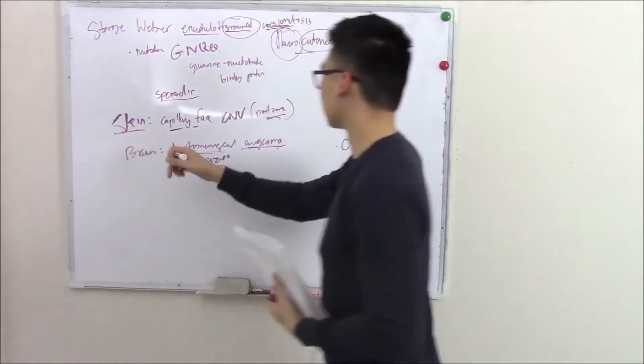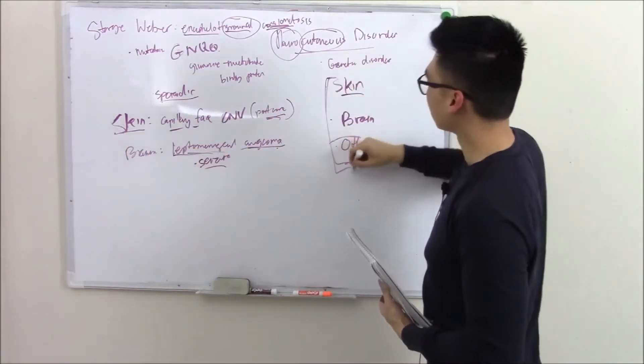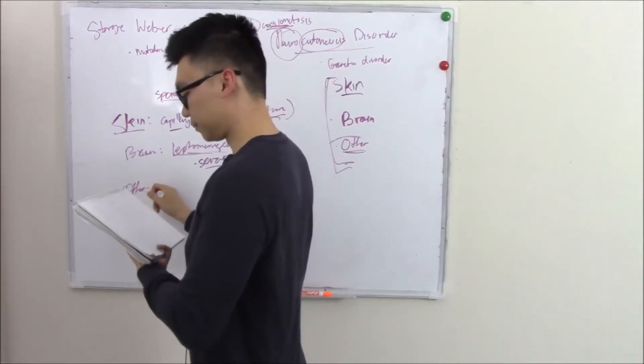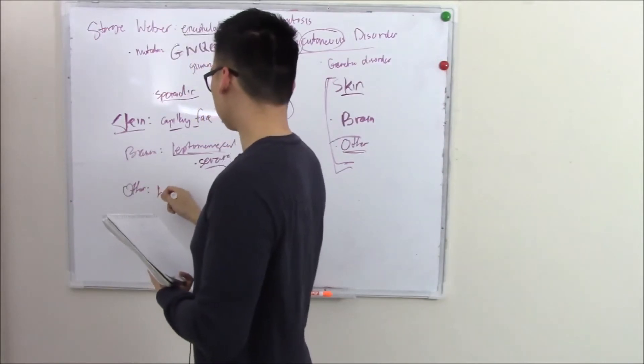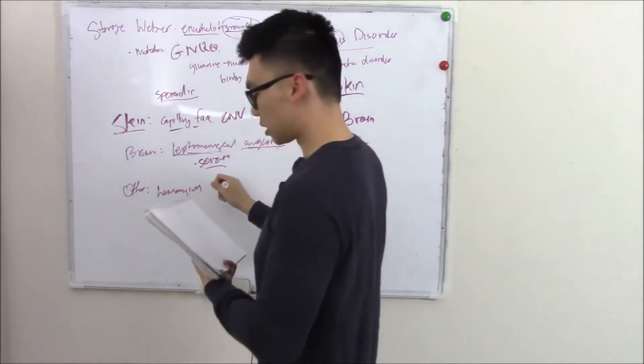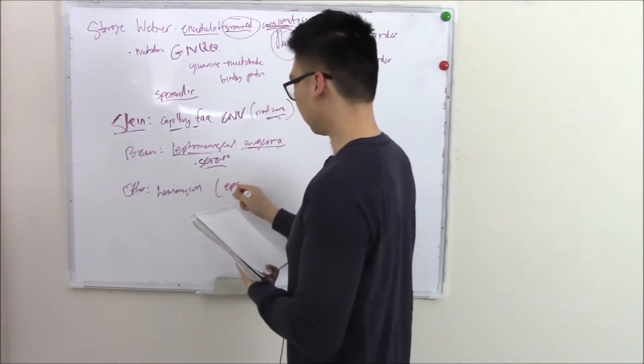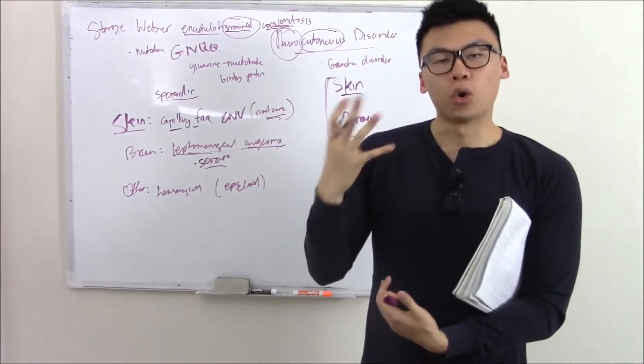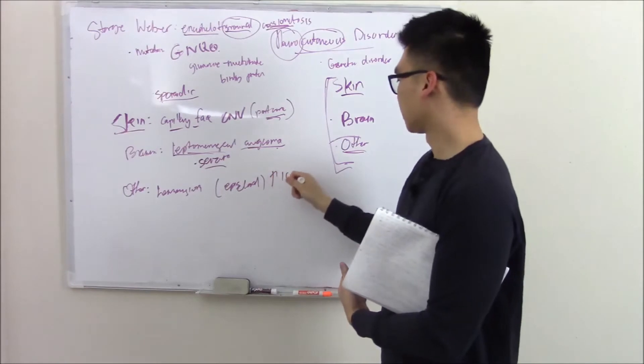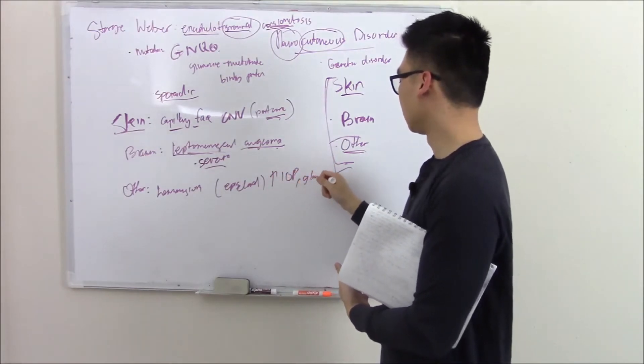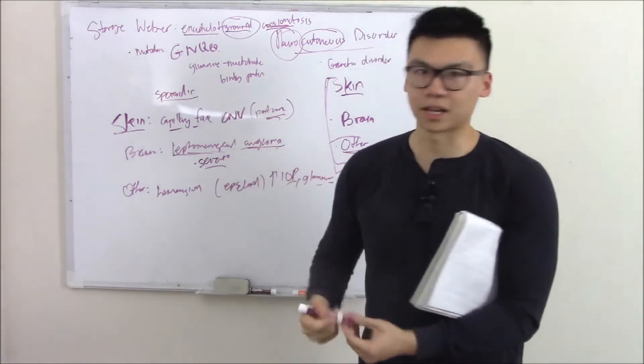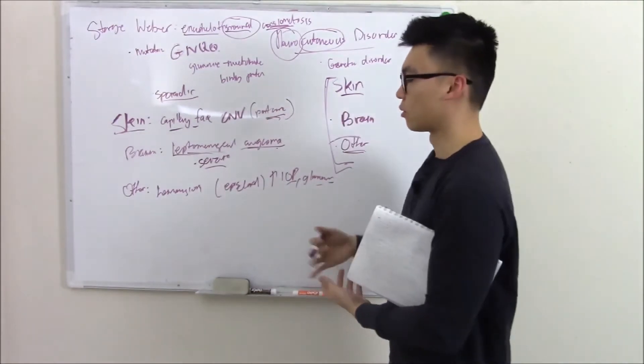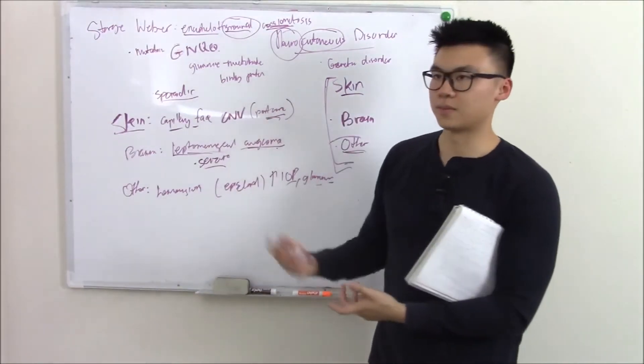We said skin, we said brain, but we also said your neurocutaneous disorders affect other things. Let's talk about other manifestations. You can have hemangiomas in your eye, especially above your sclera, episcleral. That's a mass causing mass effect, increased intraocular pressure (IOP). Pressure in your eyes can cause glaucoma. Glaucoma is literally increased IOP.